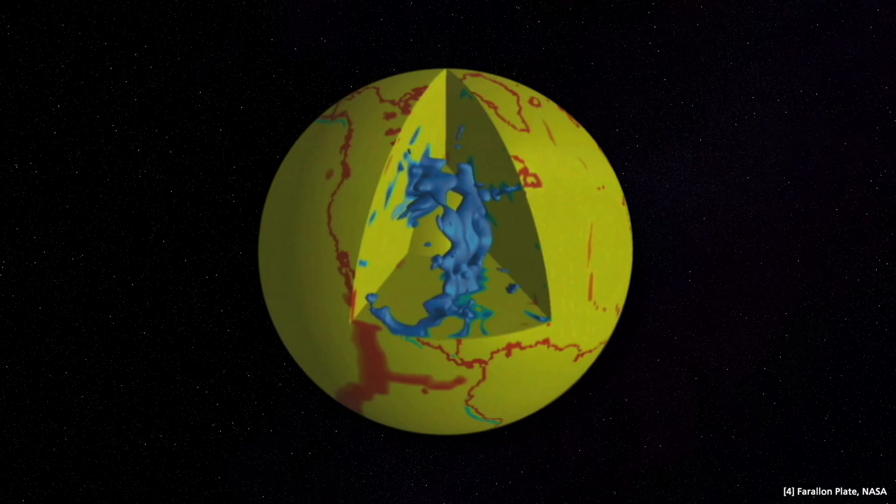Today, scientists can better determine the structure of the earth and resolve three-dimensional structures tomographically. This is made possible by the many seismic networks distributed across the earth, which record waves from both big and small earthquakes. One result from such a calculation with several hundred earthquake records worldwide is, for example, this image of the earth's mantle.